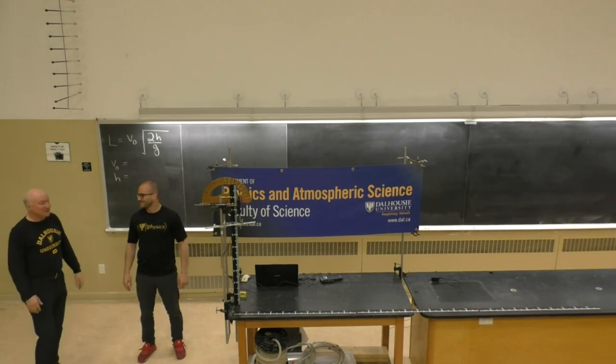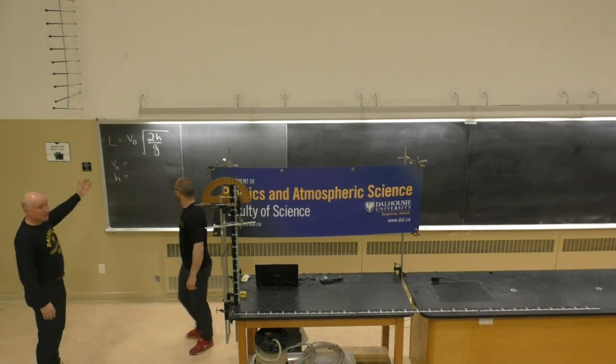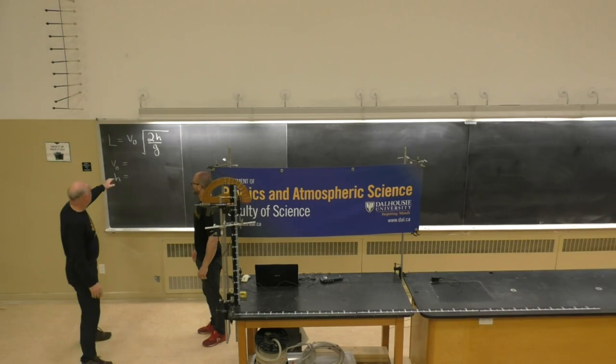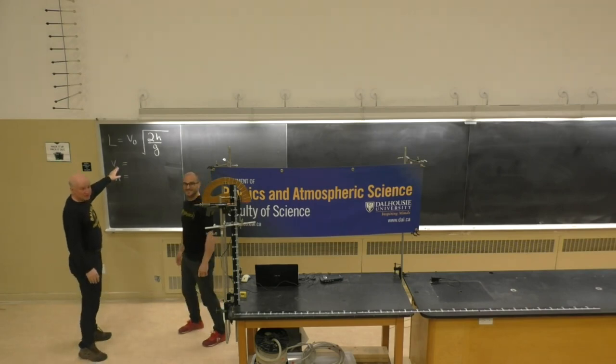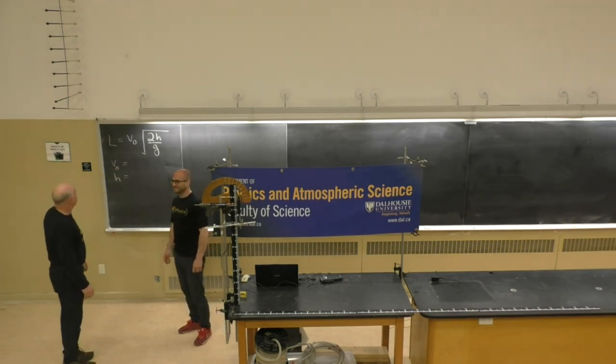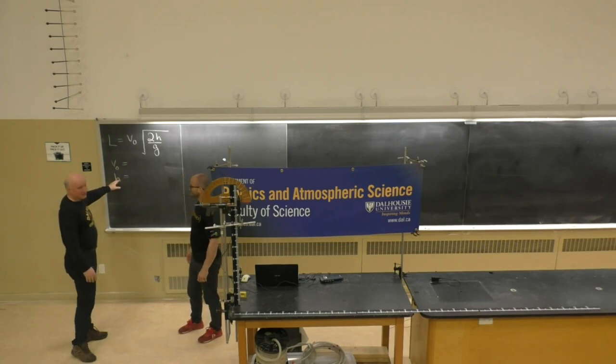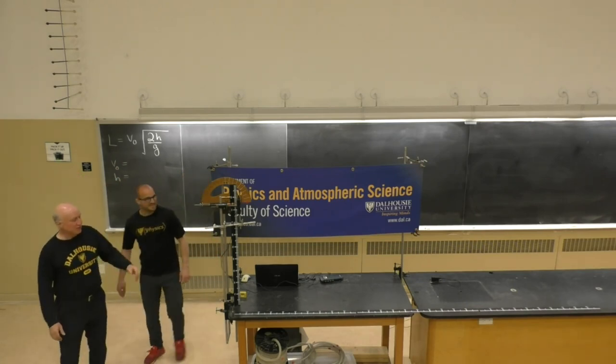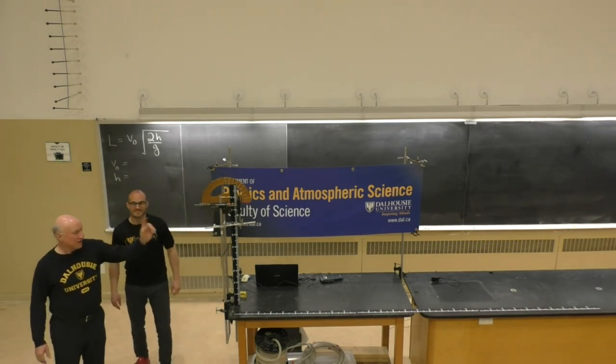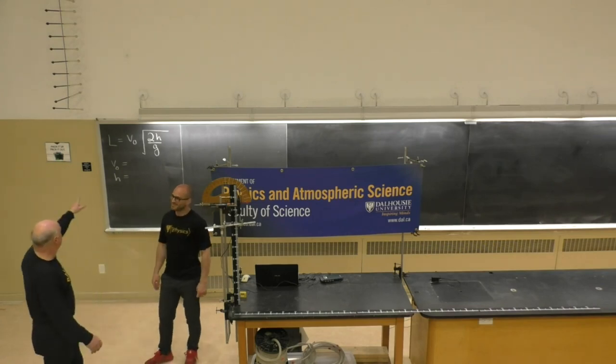Well, Mark, here we have this nice formula, and we're going to measure the velocity of the ball as it leaves the gun. We know the height above the table. So how are we going to tell that the ball travels the right distance as predicted by the formula?